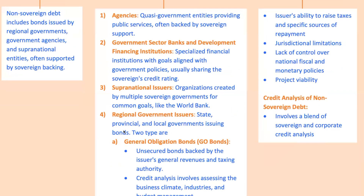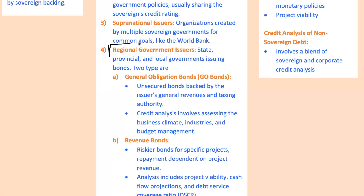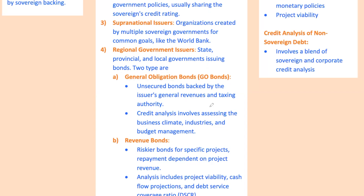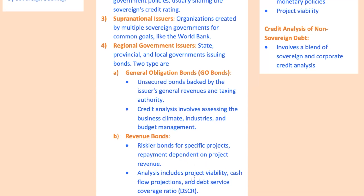Regional government issuers include state or local governments that issue debt, typically in the form of general obligation bonds or revenue bonds. General obligation bonds are backed by the general revenues of a government, like property taxes or sales taxes. Analysis here is similar to sovereign debt, focusing on the issuer's economy, business climate, and budget discipline. Revenue bonds are riskier because they're only backed by the revenue from a specific project, like a toll road. Evaluating these bonds involves analyzing the project's revenue stream and whether it can cover debt payments. Consider a city issuing a revenue bond to fund a new toll bridge — if traffic volume doesn't hit projections, revenue will fall short, affecting the bond's creditworthiness.